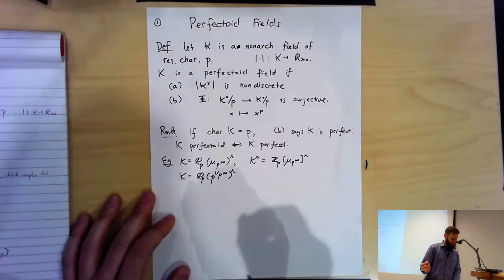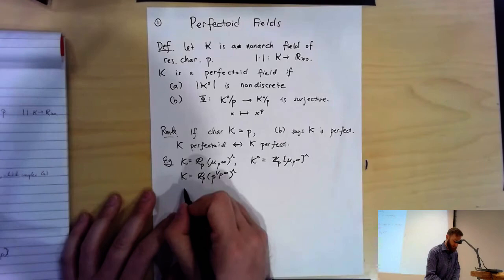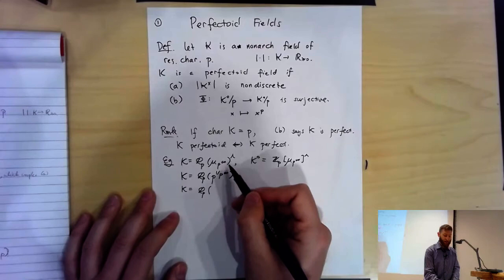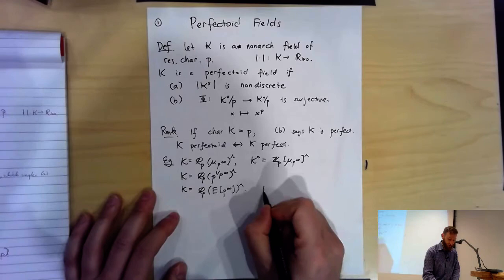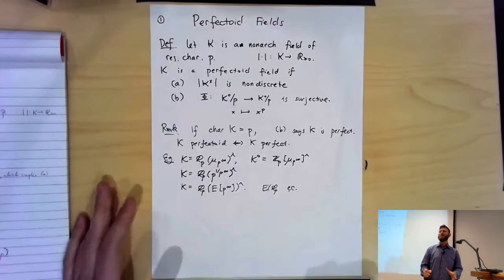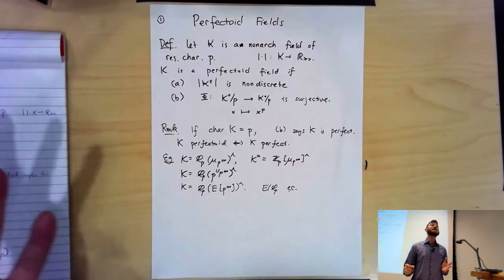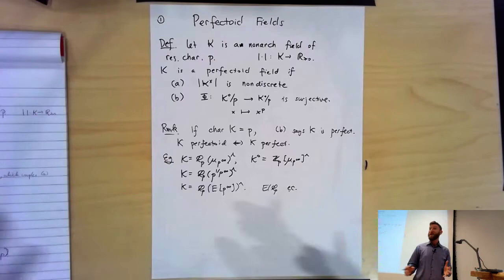Other examples arise more organically. I can take K to be Q_P and adjoin the torsion of a different algebraic group, such as an elliptic curve E over Q_P, and then complete. That's one instance of a very broad source of perfectoid fields known as arithmetically profinite fields, first studied by Fontaine and Wintenberger in work that predates the modern definition of perfectoid fields.